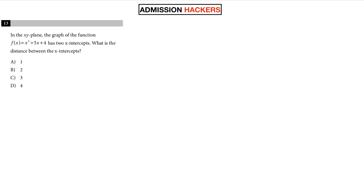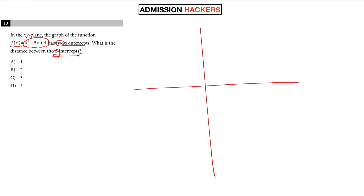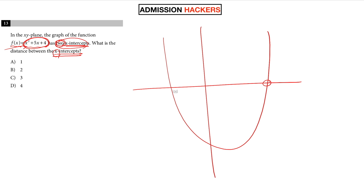So let's start with this example. The question says: in the xy-plane, the graph of the function f(x) equals this has two x-intercepts. What's the distance between the x-intercepts? Some people might see what to do right away, but most people might not. You can see all this information — x-intercepts, a quadratic function — you're kind of aware of what's going on, but you don't really know where to start. If that's the case, try visualizing. Instead of rereading it over and over, draw out what the question tells you. The question tells us it's a parabola — x squared — and it has two x-intercepts. So just sketch it out roughly: a parabola with two x-intercepts.